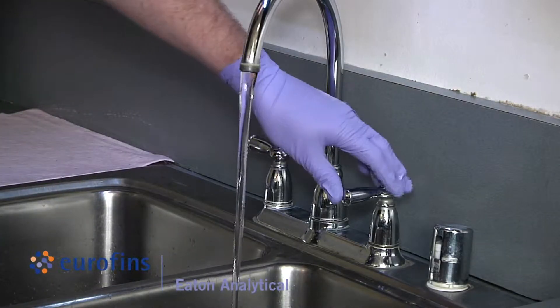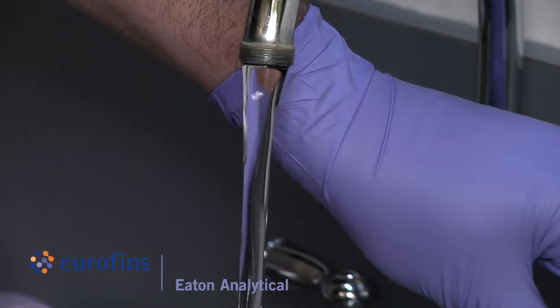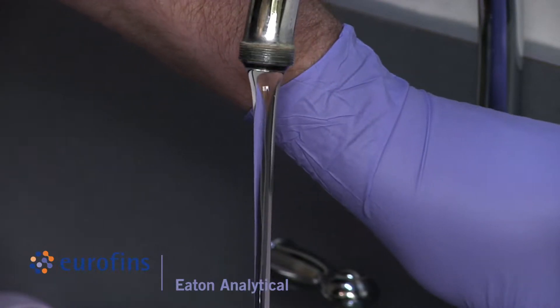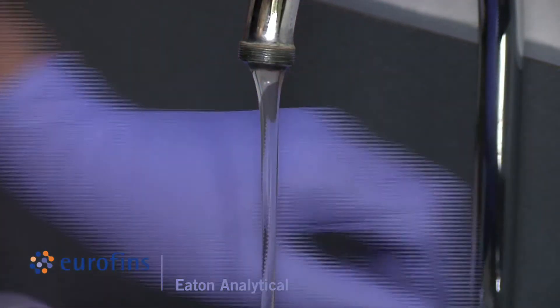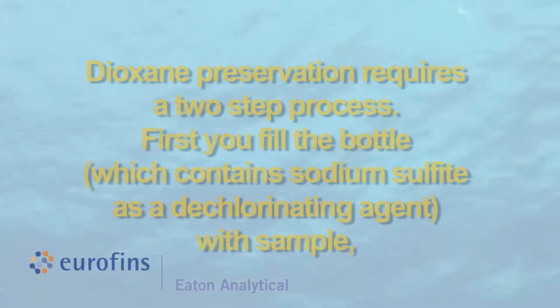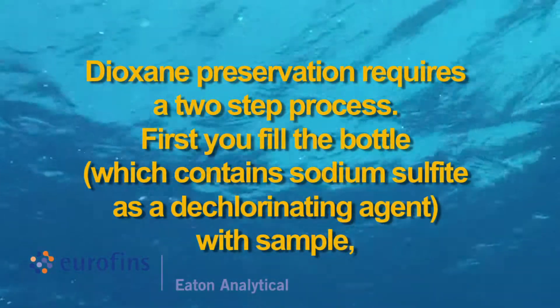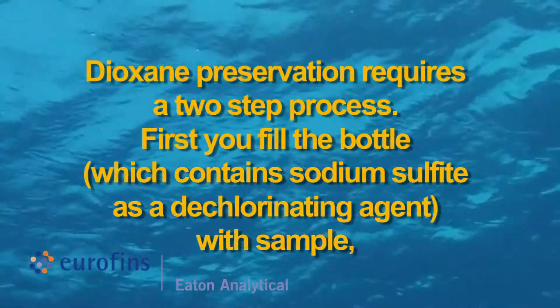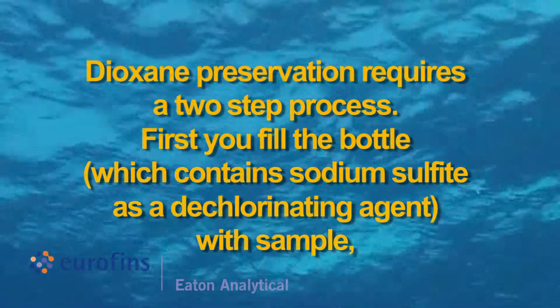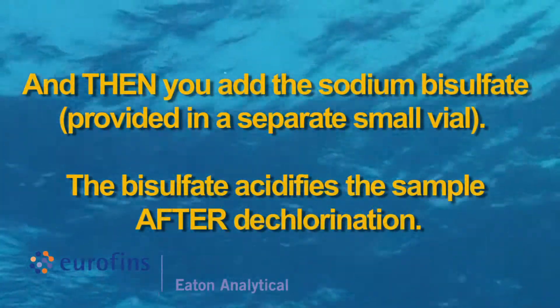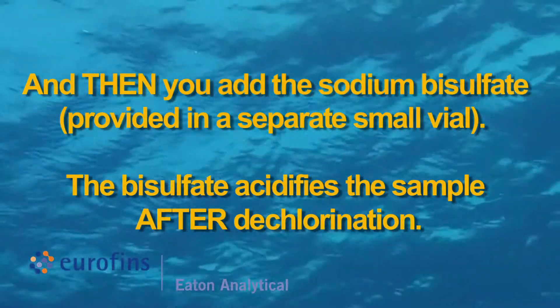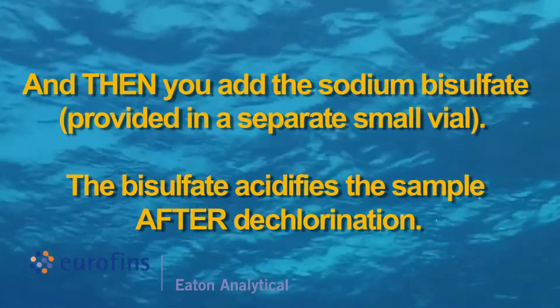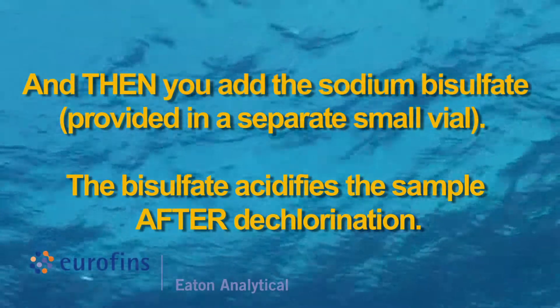After five minutes, slow water flow to thickness of a pencil to minimize splashing. Dioxane preservation requires a two-step process. First you fill the bottle which contains sodium sulfite as a dechlorinating agent with sample, and then you add the sodium bisulfate provided in a separate small vial. The bisulfate acidifies the sample after dechlorination.